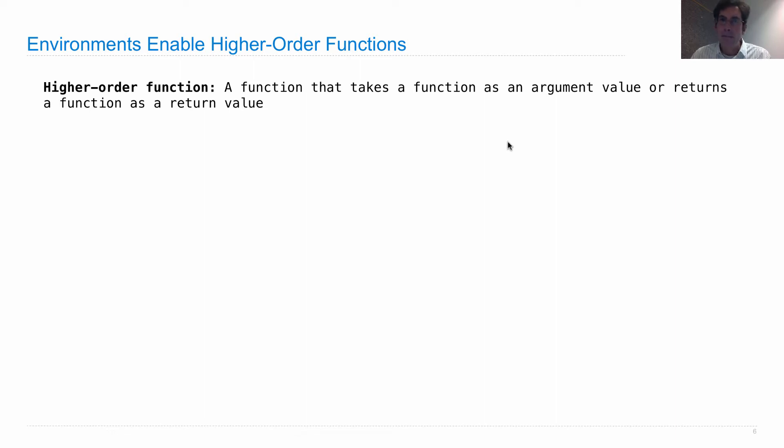Now, I've told you rules for evaluating call expressions and def statements. Now we're going to understand how they extend to higher-order functions. What if we pass in a function as an argument? It turns out the rules I've already told you already handle this case. We will look at an example.